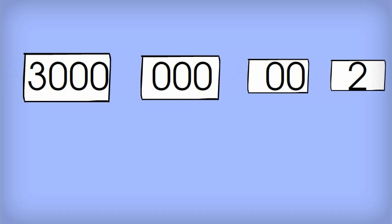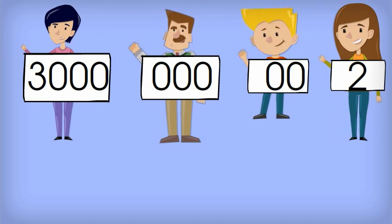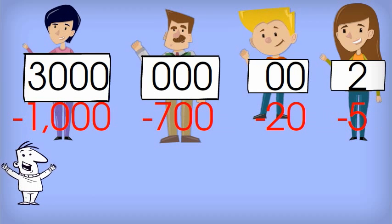I like to give each place value in the top row a name, an actual name of a person. So first we have Thelma in the thousands place, then we have Hector in the hundreds place, Ted is in the tens place, and finally Olivia is in the ones place. On the bottom, we have Bill the bill collector. He collects money from all the people.